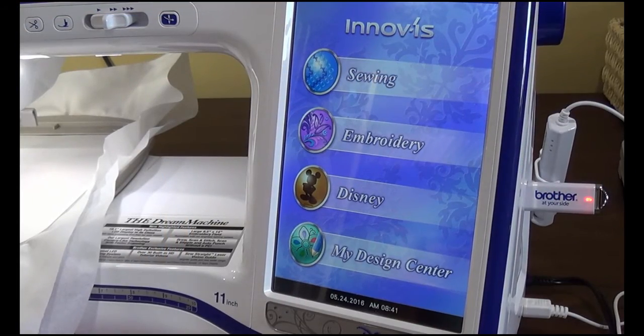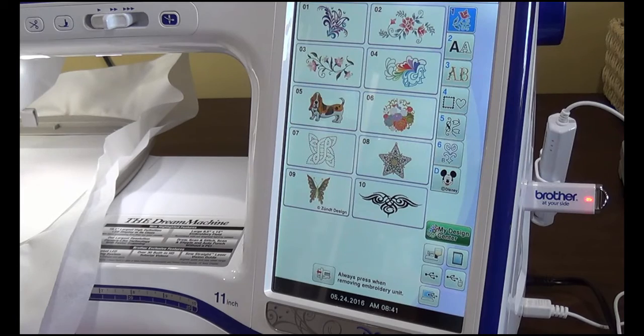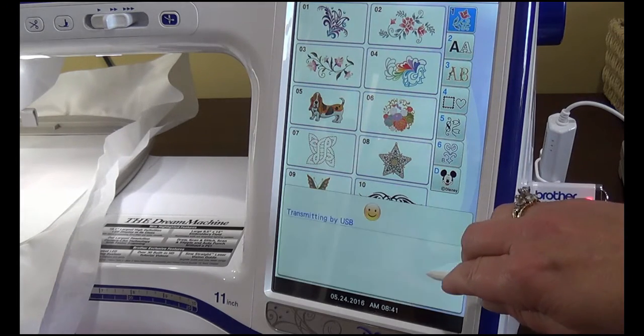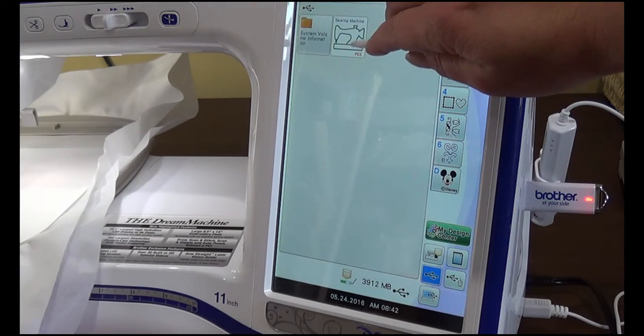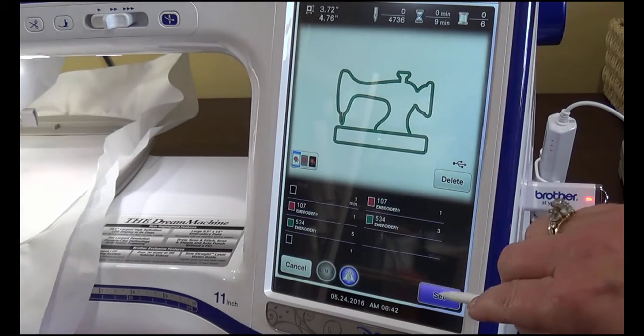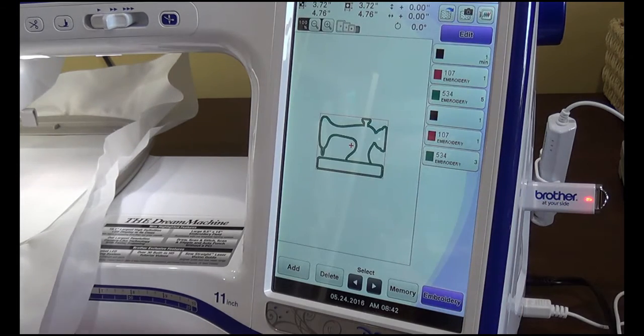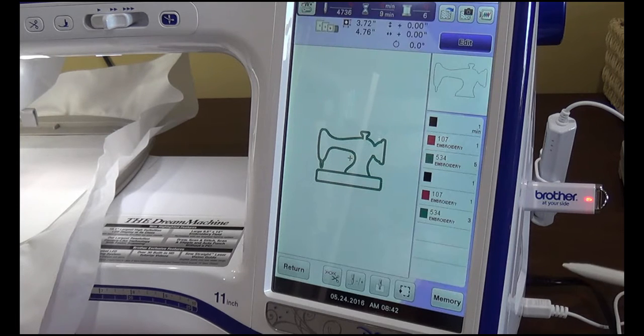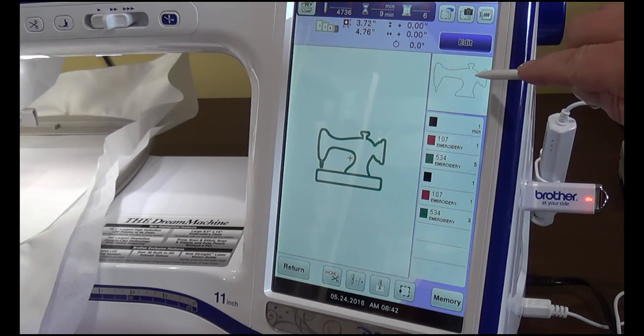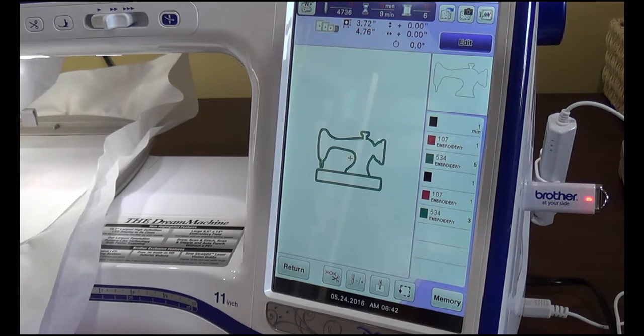At the embroidery machine, we're going to press Embroidery. Locate our design on the USB stick and press Set. Press Embroidery and we're ready to stitch. The first piece will be the placement stitch for the main part of the sewing machine. Put the hoop into the machine and we're ready to start stitching.